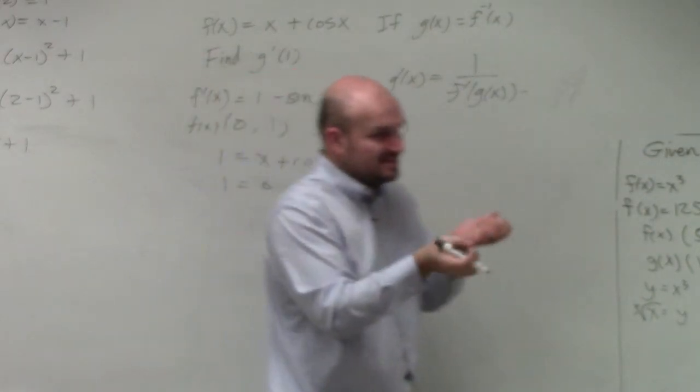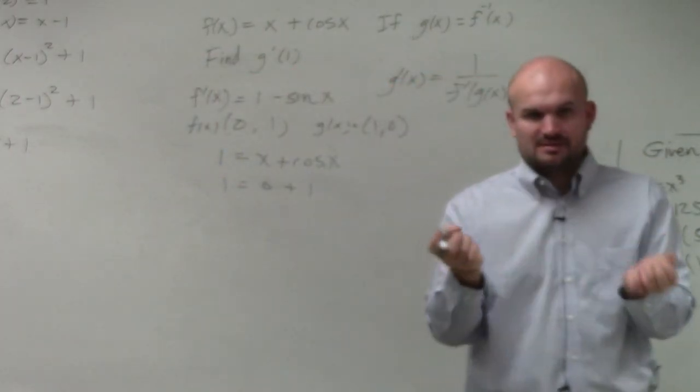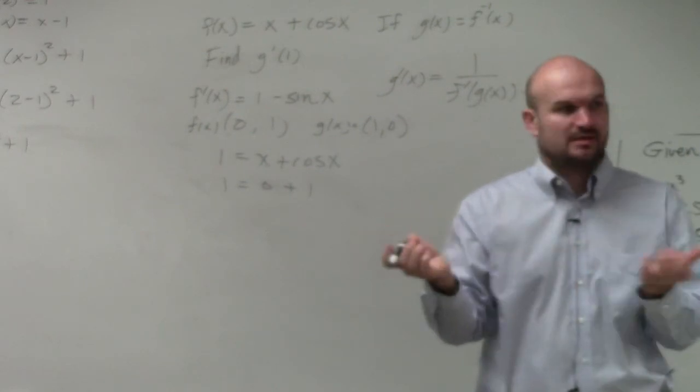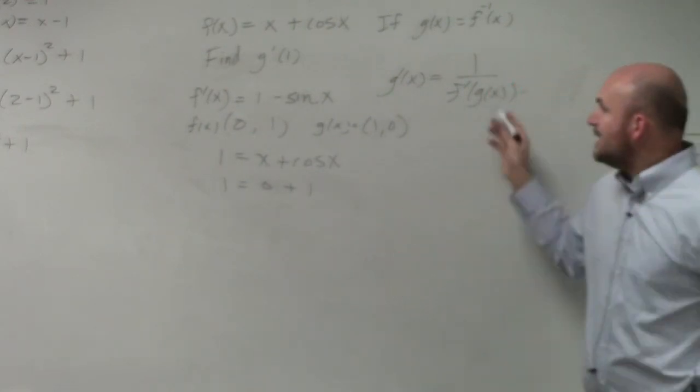Right? The f of x and g of x's are swapped. Does that make sense? Unit circle, plugging in 0, you get cosine of 1, and so forth.